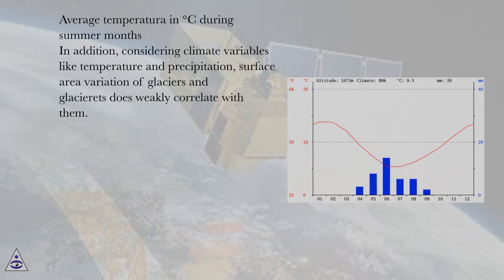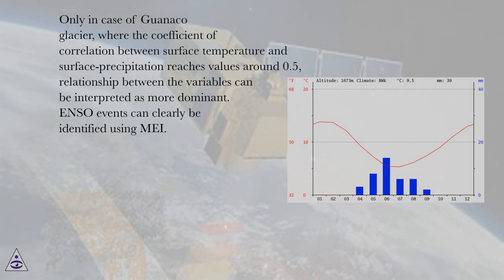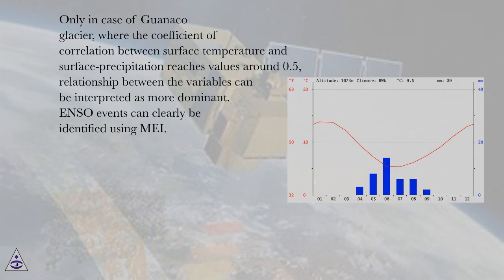Considering climate variables like temperature and precipitation, surface area variation of glaciers and glacier rays does weakly correlate with them. Only in the case of Guanaco glacier, where the coefficient of correlation between surface temperature and surface precipitation reaches values around 0.5, can the relationship between the variables be interpreted as more dominant.